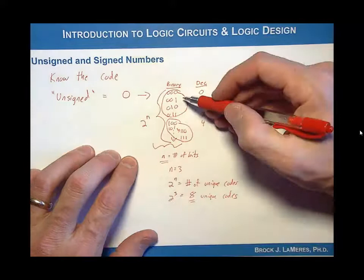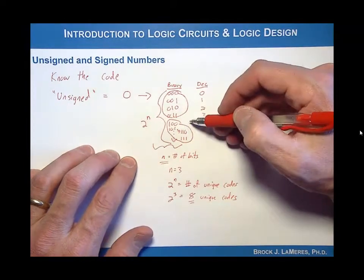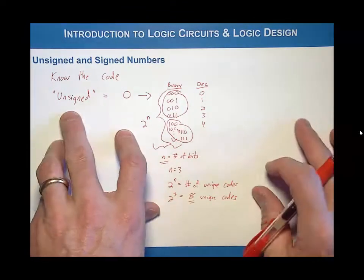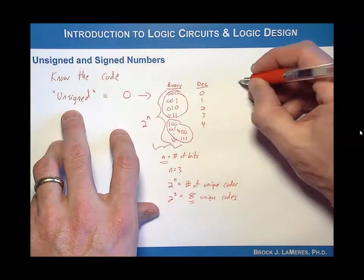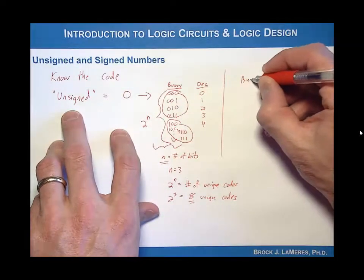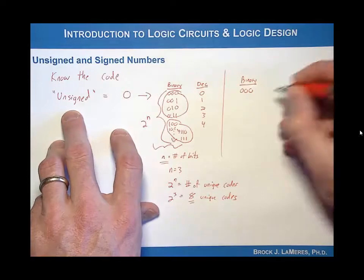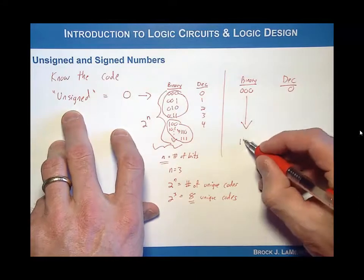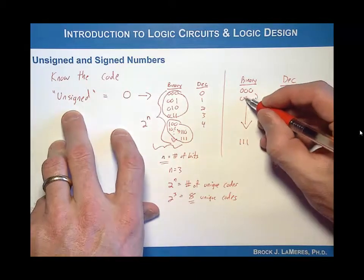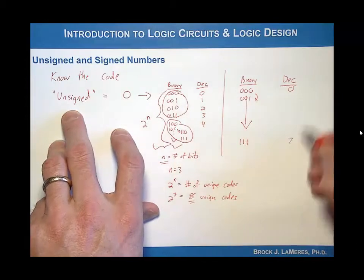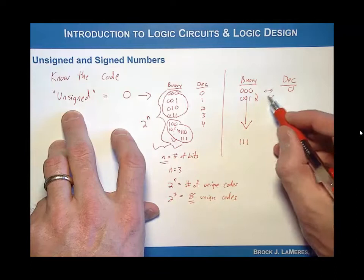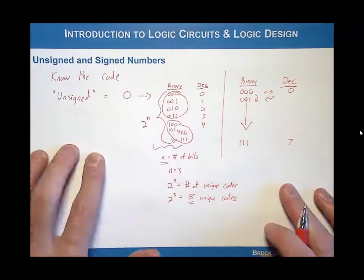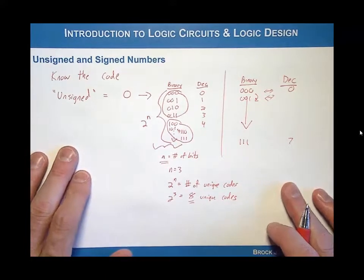We can map those codes to any type of information we'd like. When we talk about an unsigned number, the binary code starting at 000 corresponds to decimal zero, and you count up to the highest value in sequence, incrementing by one each time, up to the highest decimal number. There is a one-to-one mapping between the binary code incrementing forward and the decimal number incrementing forward by one. That is an unsigned number — it simply does not have a sign bit.